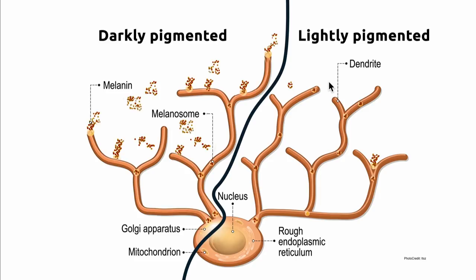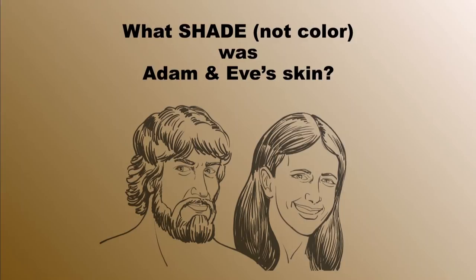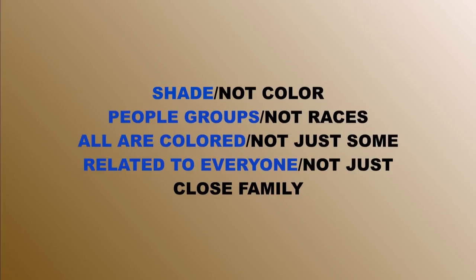It's very easy to understand. Those differences in skin shade — not skin colour, skin shade — are just minor differences. Genetically, they're very minor. What shade was Adam and Eve's skin? Not what colour — everyone's the same colour. We need to change our terminology. You don't talk about what colour someone is, it's what shade they are. We shouldn't be talking about races because of Darwin's ideas. Let's talk about people groups.